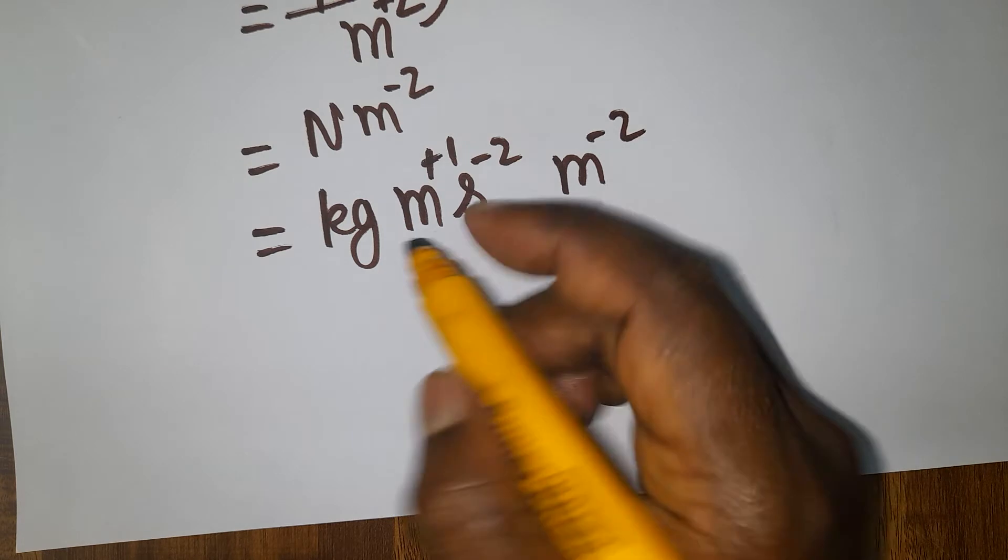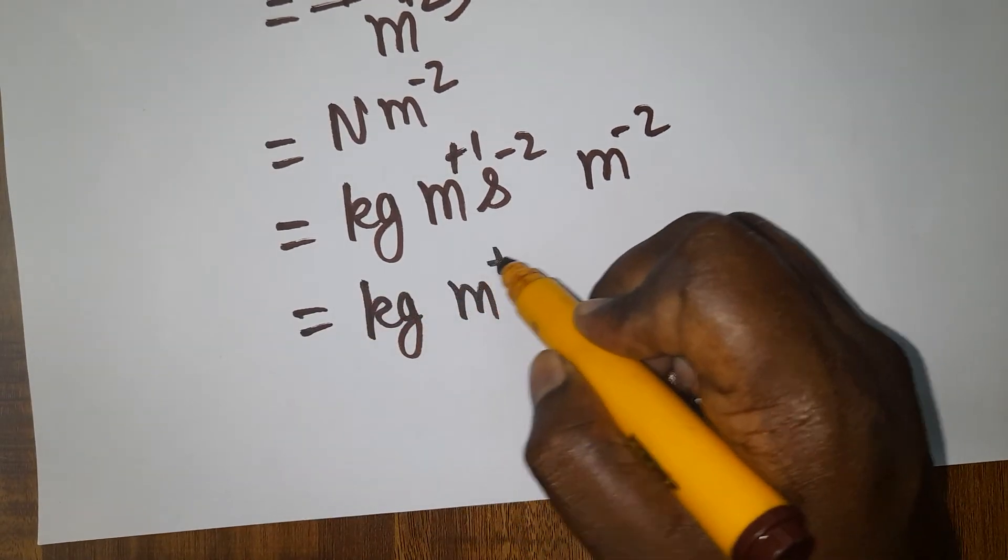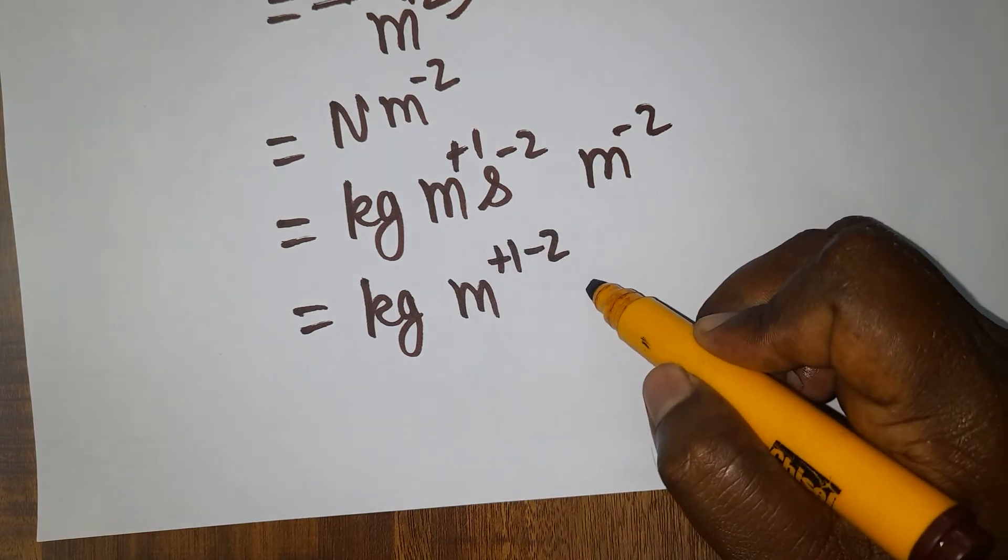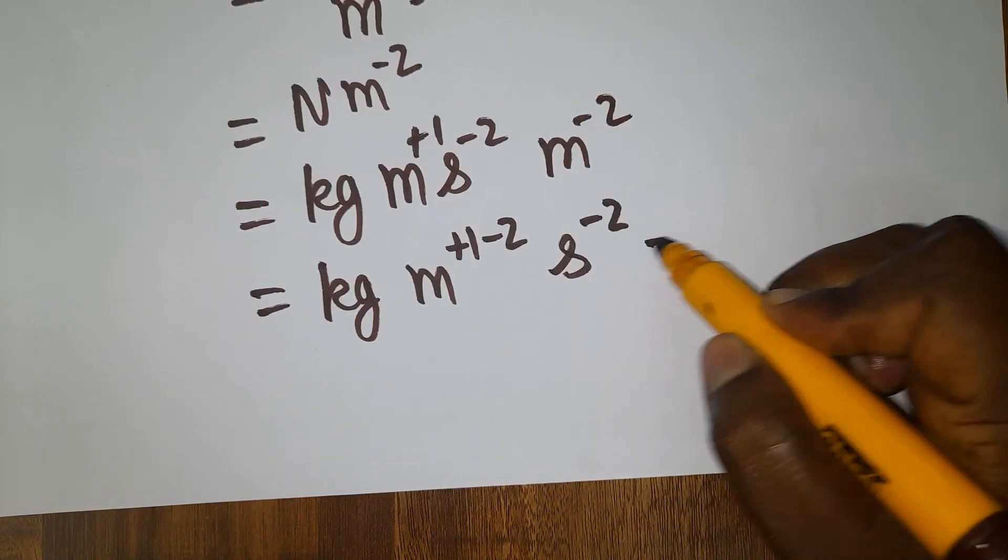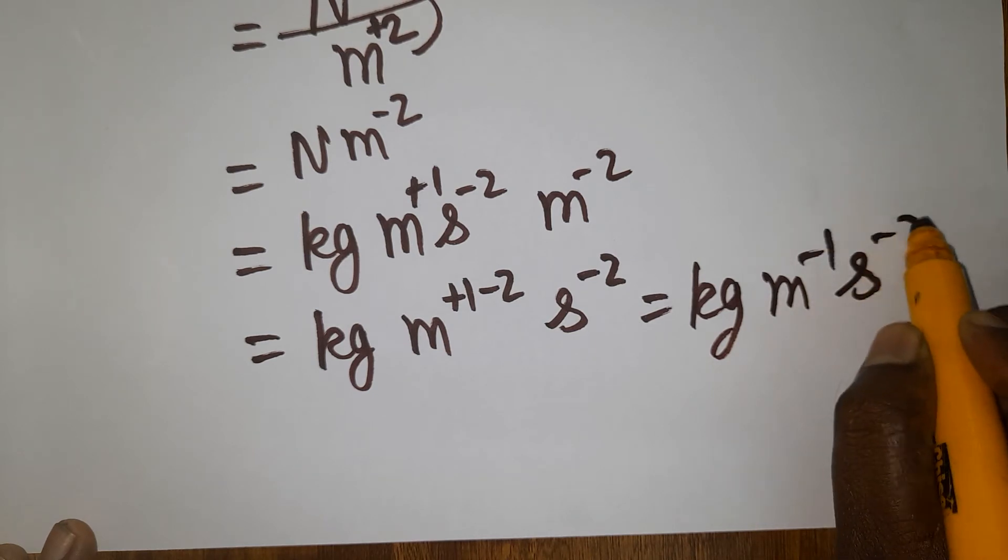Now what is the answer, plus 1 minus 2? The answer will be kg meter plus 1 minus 2. Answer will be minus 1 second minus 2. So we will have kg meter minus 1 second minus 2.